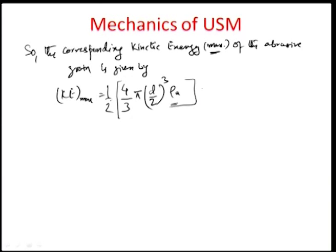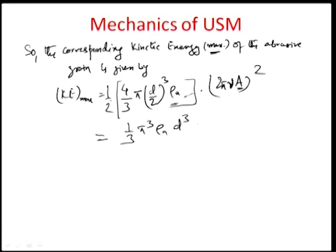With v equal to 2 pi nu A, the maximum kinetic energy simplifies to (1/3) pi^3 rho_a d^3 nu^2 a^2, where rho_a is the density of the abrasive grain, d is the grain diameter, nu is the frequency, and a is the amplitude of motion.